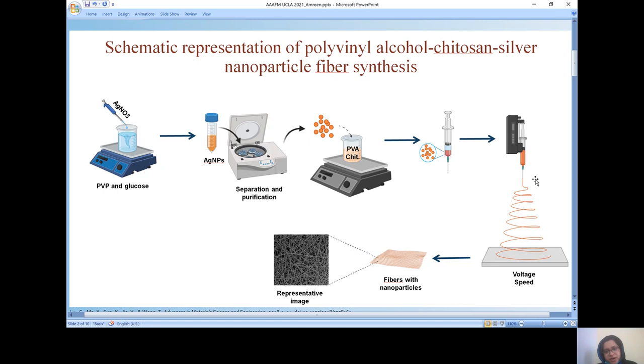Later on in the second part, the polyvinyl alcohol and chitosan was used as a fiber solution in which the silver nanoparticles formed in part one was incorporated and further electrospun with optimization of voltage and the speed. In the fibers obtained, we're having particles in it. This is the representative image, the scanning electron microscopic image of the fibers confirming the morphology and formation of the fiber.